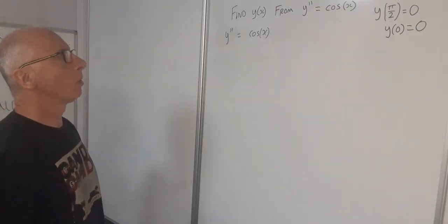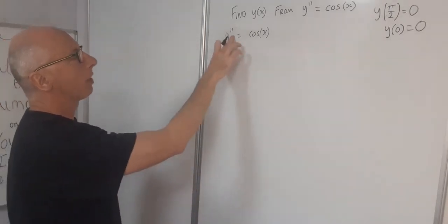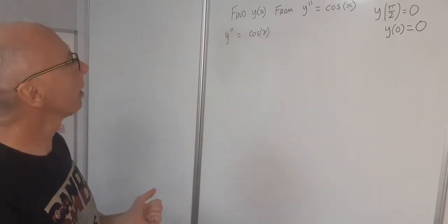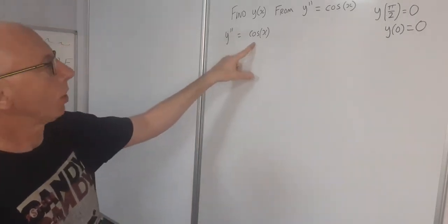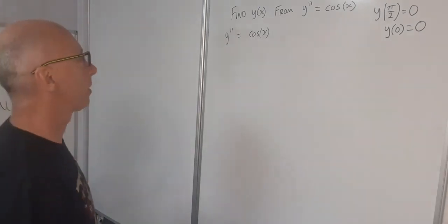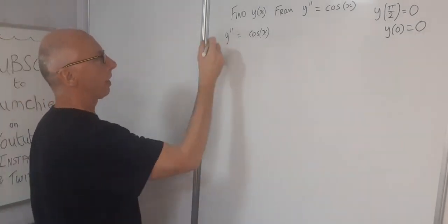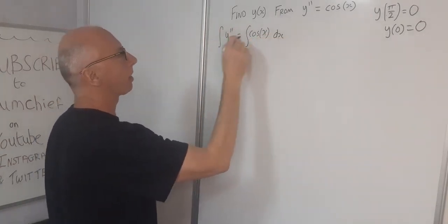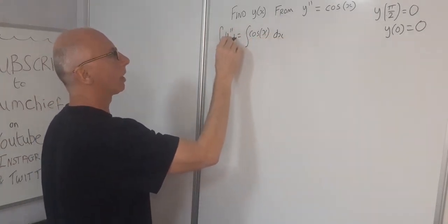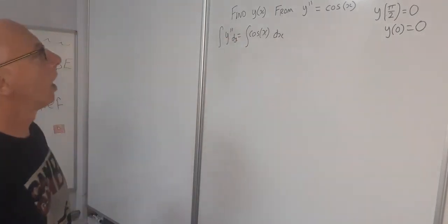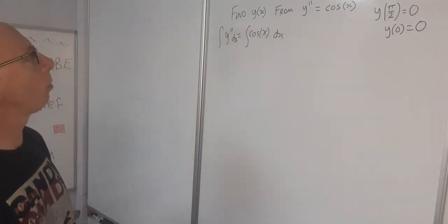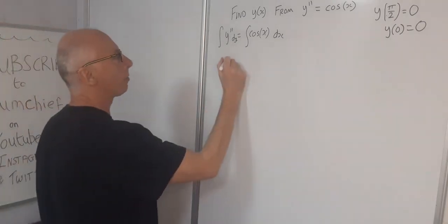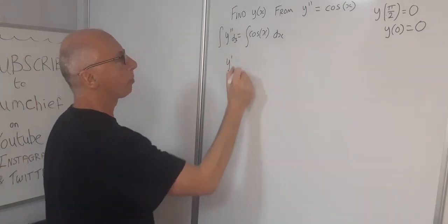One way we can do this is to integrate out this derivative. So y double prime, if we integrate that twice, we're going to have a solution here with regards to cosine of x. So let's integrate this out now. So this one will be dx and this one will be dy. So y double prime, integrate that with regards to y, we just end up with y prime.